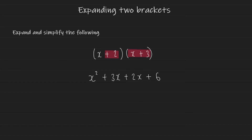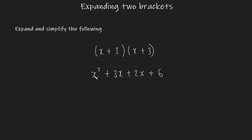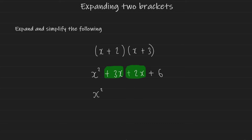Now all you have to do is collect like terms and simplify. There's only one x squared term here, so I'm just going to go ahead and write down x squared. For the x, there are two terms with x in it — there's the plus 3x and there's the plus 2x. And if we combine them, we get plus 5x.